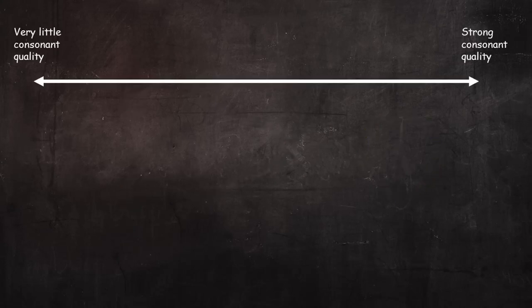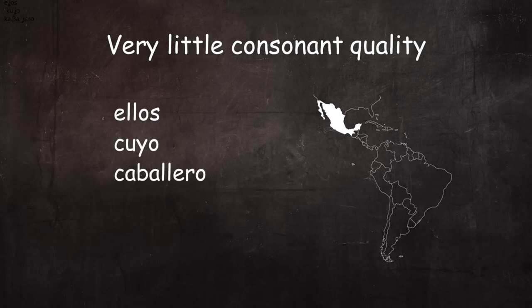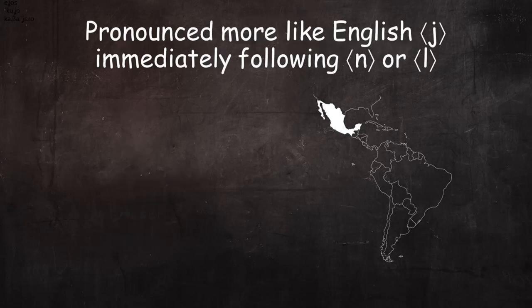On one end of the spectrum we have Mexico, where in most positions this sound is pronounced with very little consonant quality, much like the English Y sound. It's important to know, however, that even in dialects where Y is very vowel-like, it's sometimes pronounced with more consonant quality, especially when it immediately follows N or L.